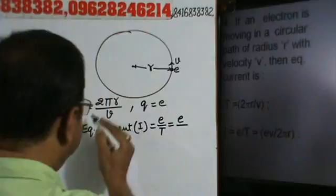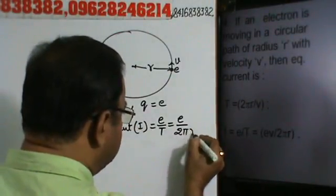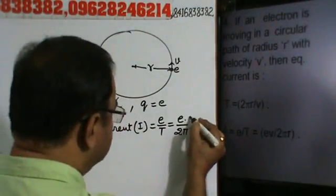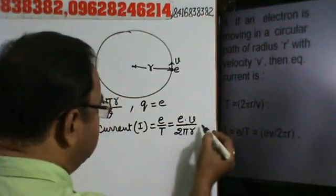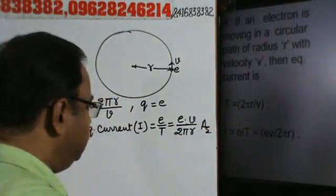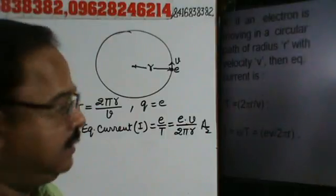And by T kitna ho gaya? 2πR by V hai, to into V. So equivalent current ho jaagi hamaara? This will be the equivalent current. Right?